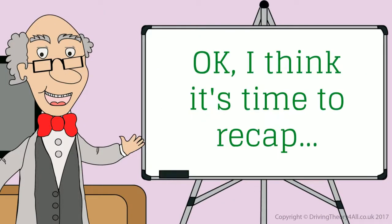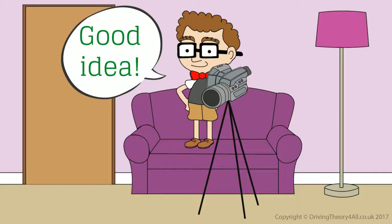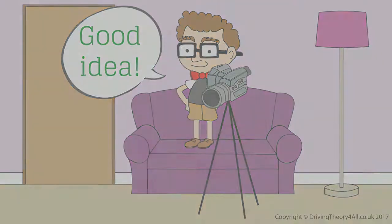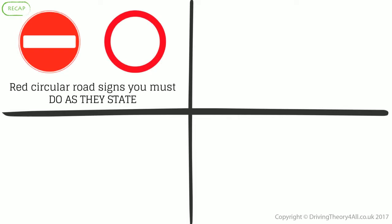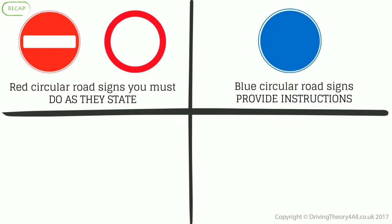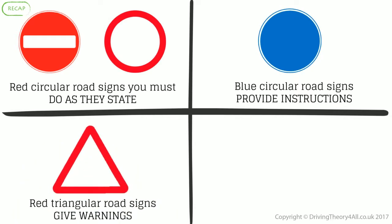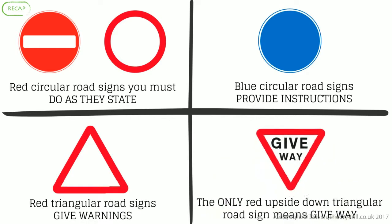OK, I think it's time to recap. Good idea. Red circular road signs — you must do as they state. Blue circular road signs provide instructions. Red triangular road signs give warnings. The only red upside-down triangular road sign means give way. Bye!